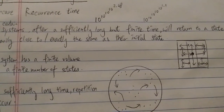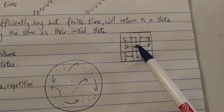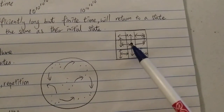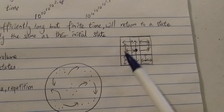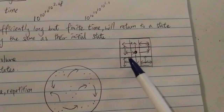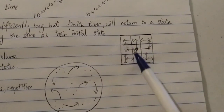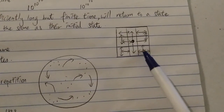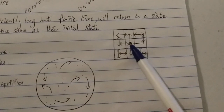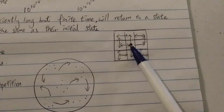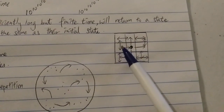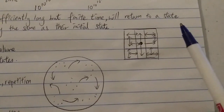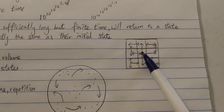A quick simple example: imagine a person, a particle, or an animal — it can be anything — placed in a finite volume or finite space. In this simple example, let's use a 3x3 box. That person can move around randomly in any direction — say he starts from the middle box, moves up, then left, then down, and so on.